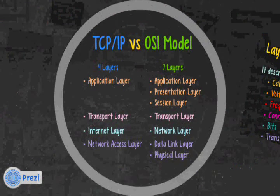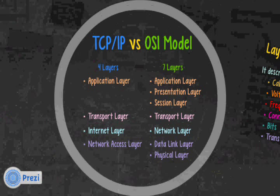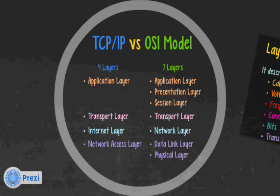TCP/IP versus the OSI model. The OSI model doesn't really exist — it's just a guide that we use to understand protocols like TCP/IP or network protocols. TCP/IP has four layers: application layer, transport layer, internet layer, and network access, and it maps to the OSI model in this manner.